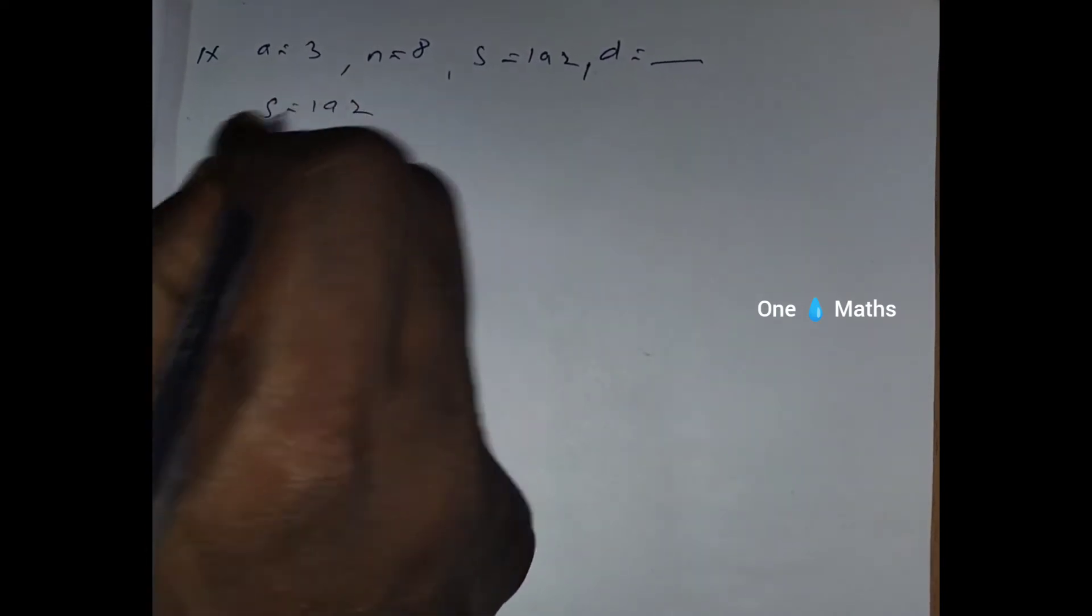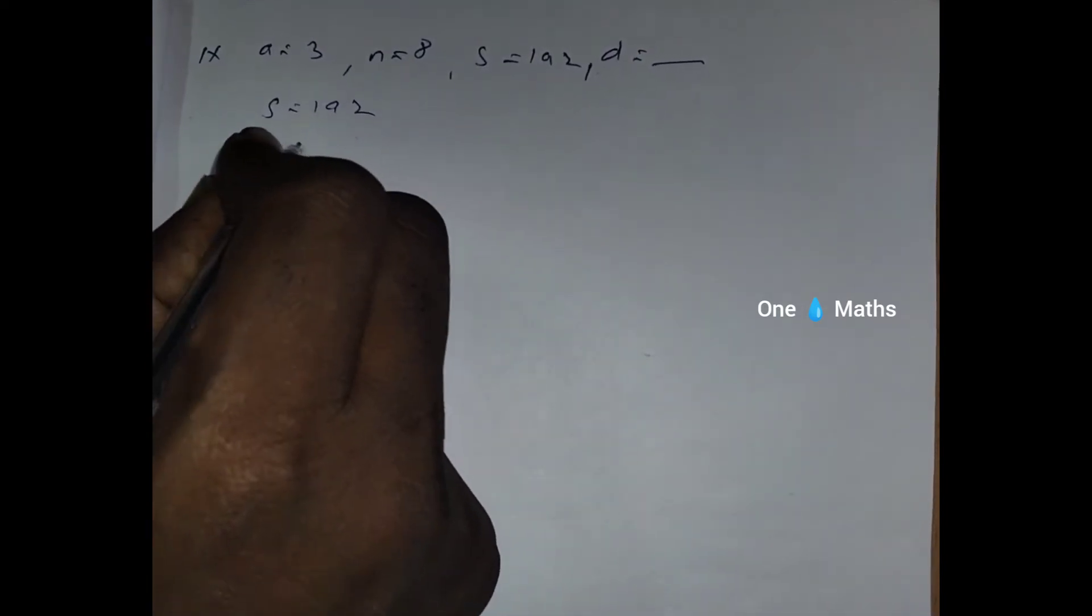S equals 192 means that they are given N equals 8, that means S8 equals 192.